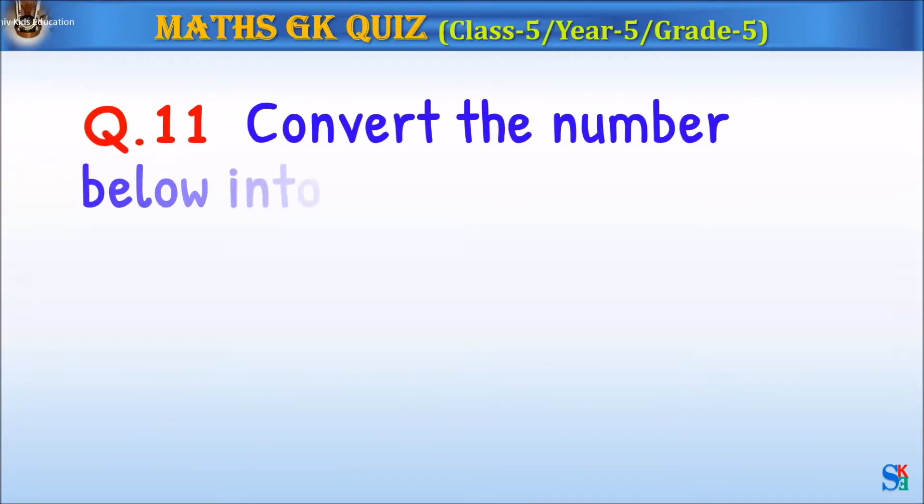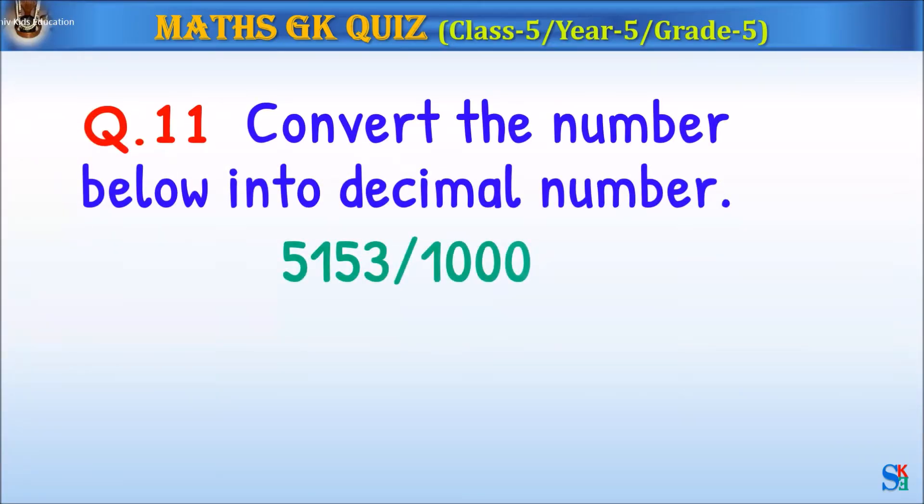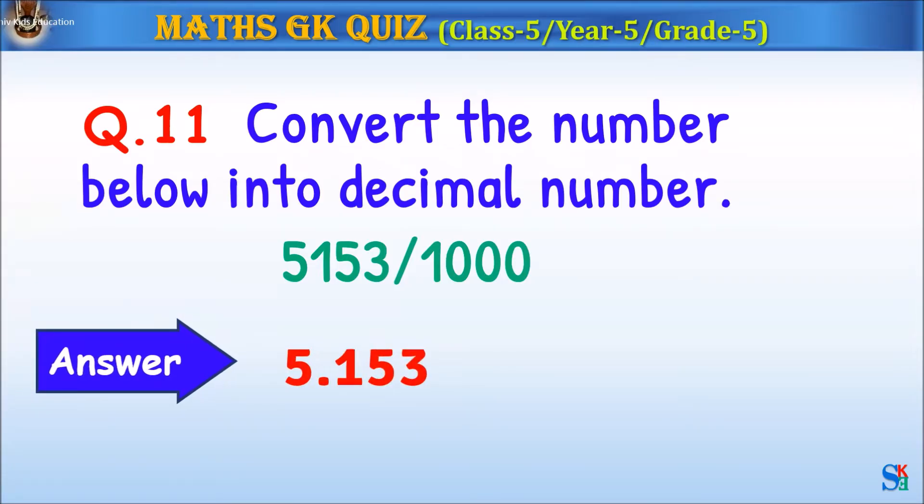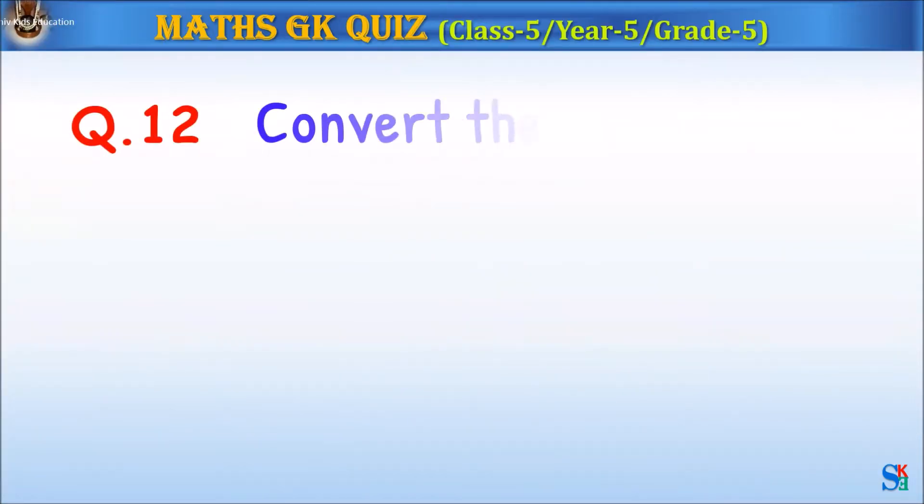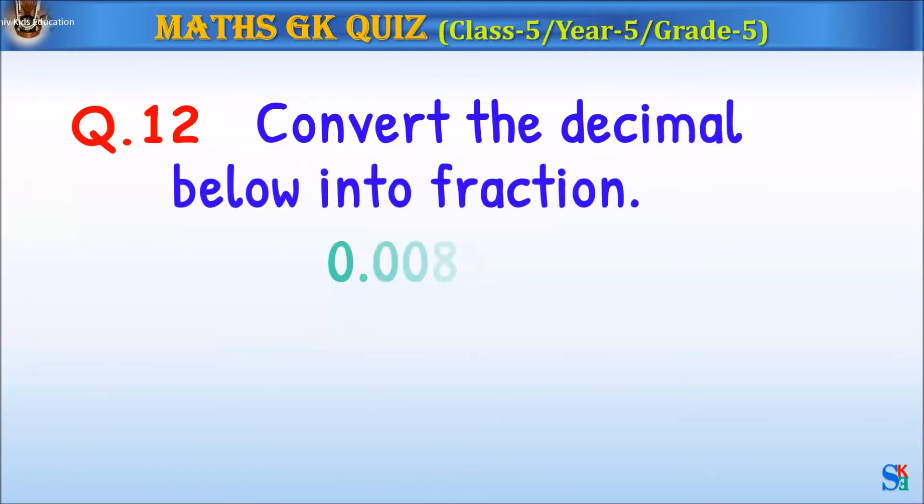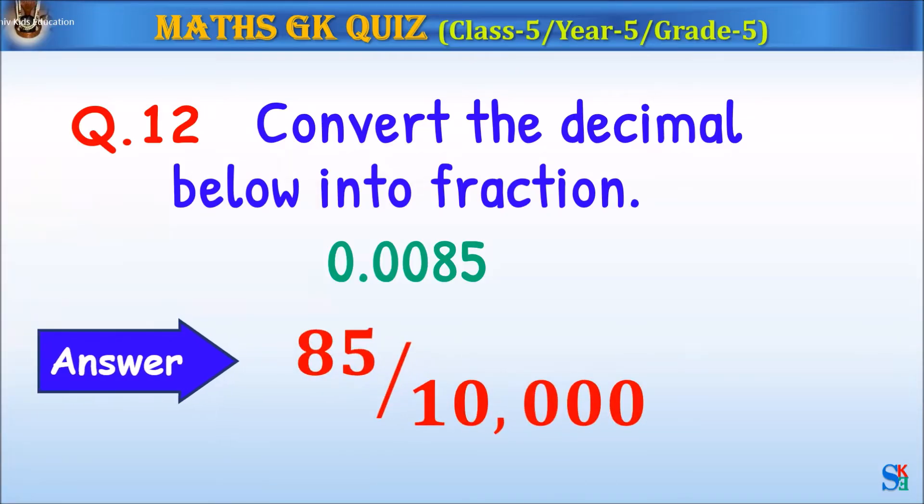Question 11: Convert the number below into a decimal number. Question 12: Convert the decimal number below into a fraction. The answer is 85 over 10,000.